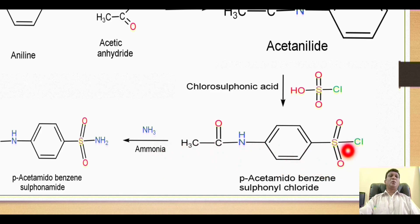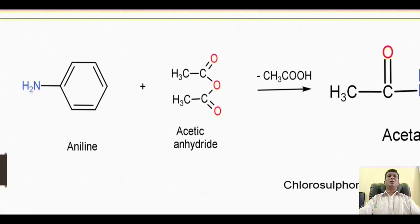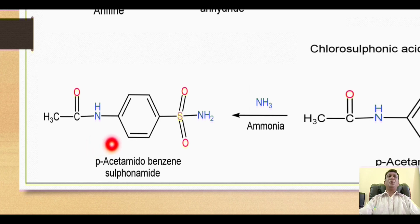Thus this chlorine will be liberated. The sulfur and amino group in the form of NH2 will get attached to this sulfur to give formation of this derivative, which is called para-acetamidobenzene sulfonamide.